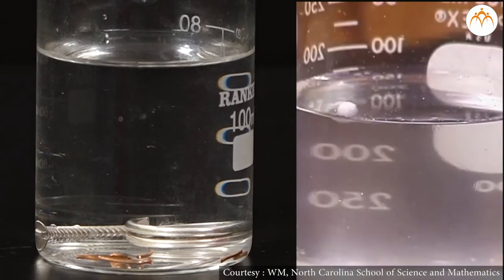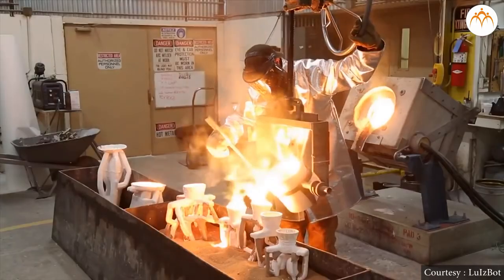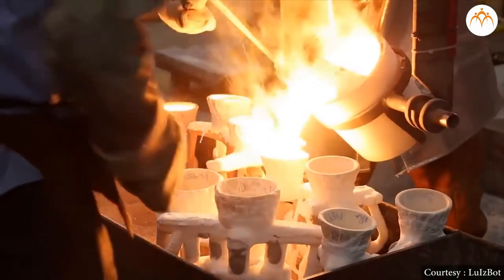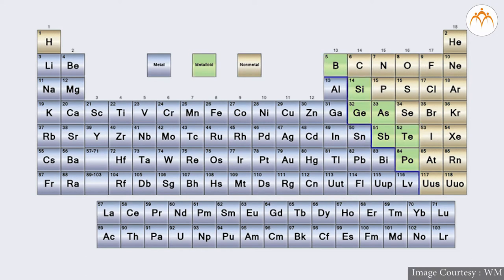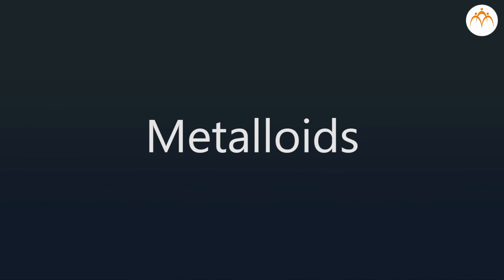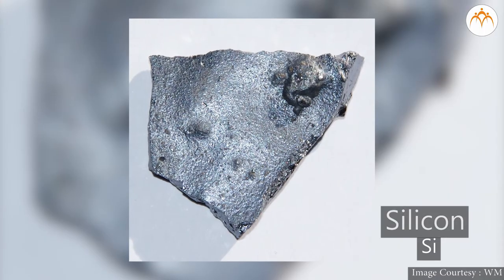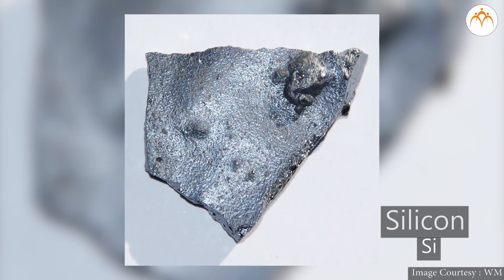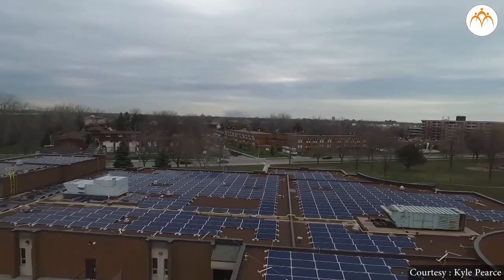Today we learned about the physical properties: density, melting point, and boiling point. This behavior is best observed in the case of silicon. Discuss with your friends and find out how this property of silicon is best used for solar panels. Challenge!